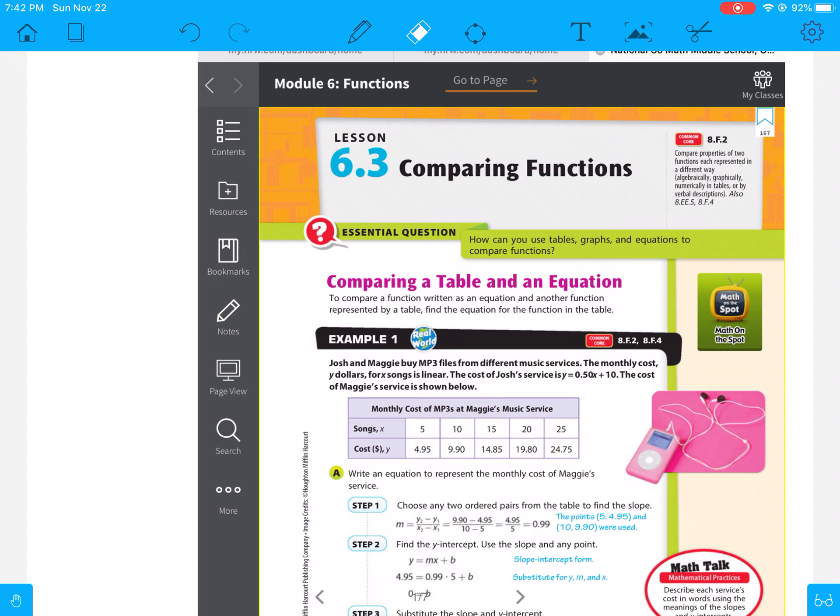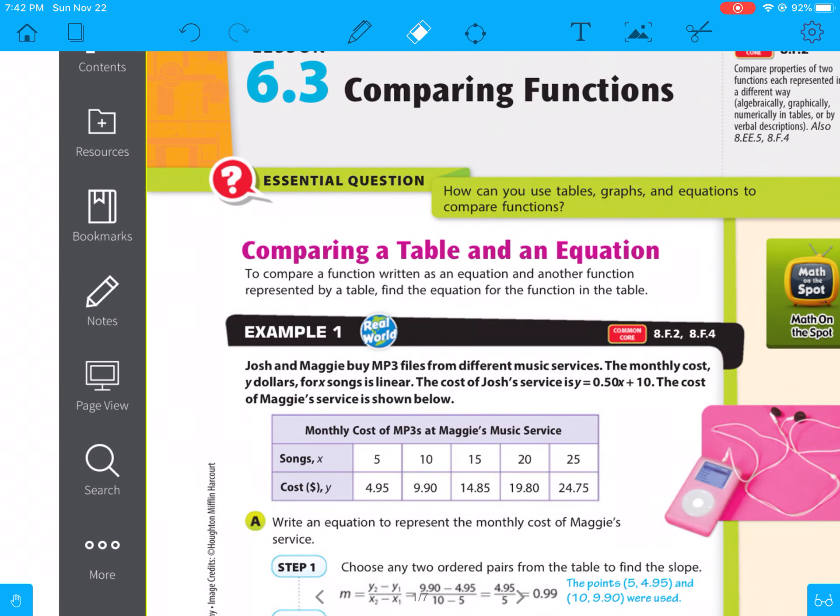So the main thing you should do is either compare them with two different graphs, or what I like to do is compare them as two equations. So if you look here, it says to compare a function written as an equation and another function represented by a table, find the equation for the function in the table. So this is just using information that you've already known.